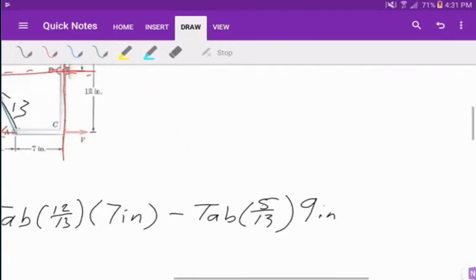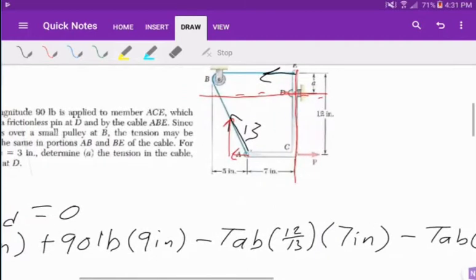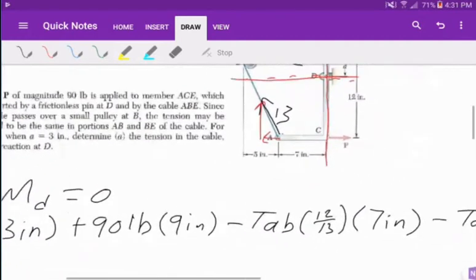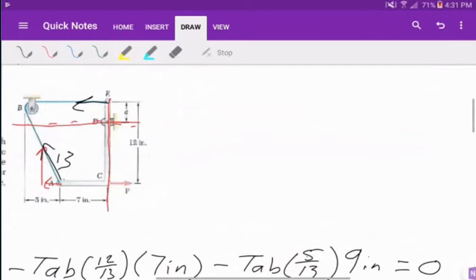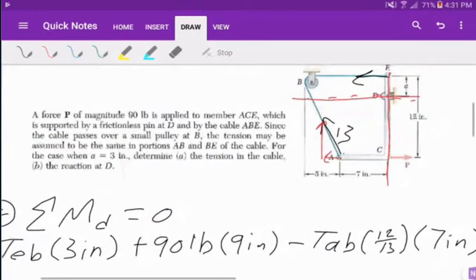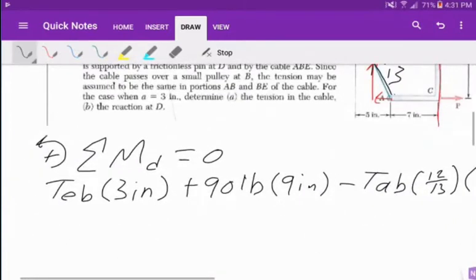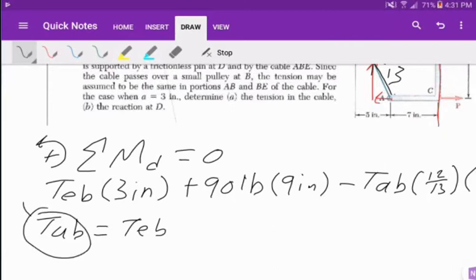And this is all equal to zero. I have P, I have tension EB, and I have my two tensions AB. But now it says that the tension in AB and EB can be considered the same. So tension AB is equal to tension EB. So I'm going to substitute this into there.